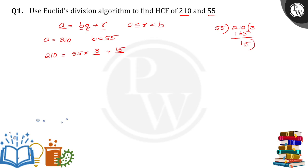Now 45 will become the divisor and 55 will become the dividend. So how many times? One time. 45 times 1 is 45, so the reminder will be 10. We can write this as 55 equals 45 into 1 plus 10.